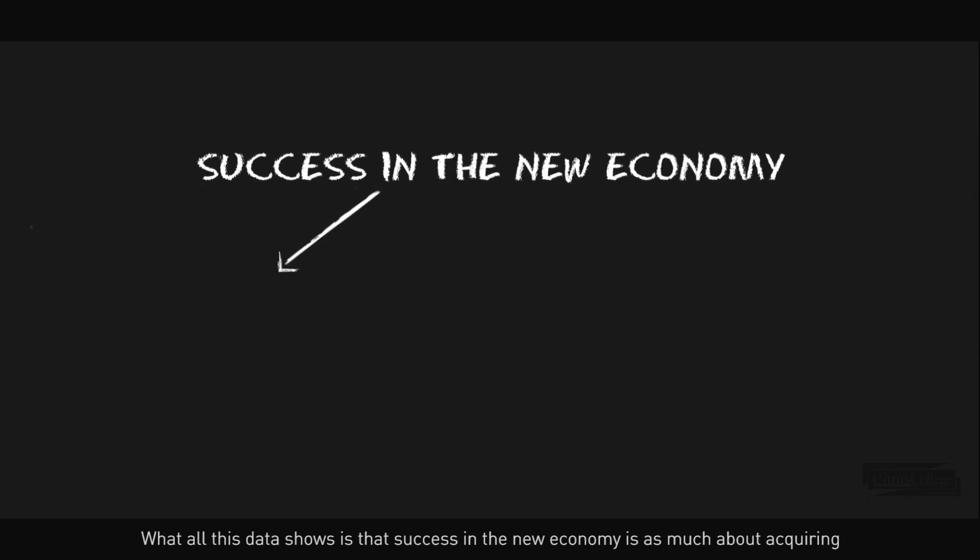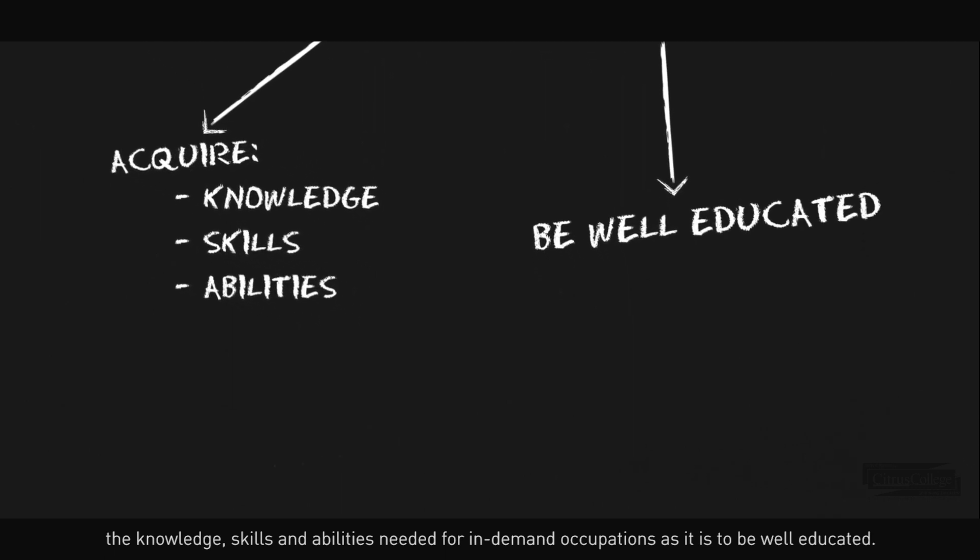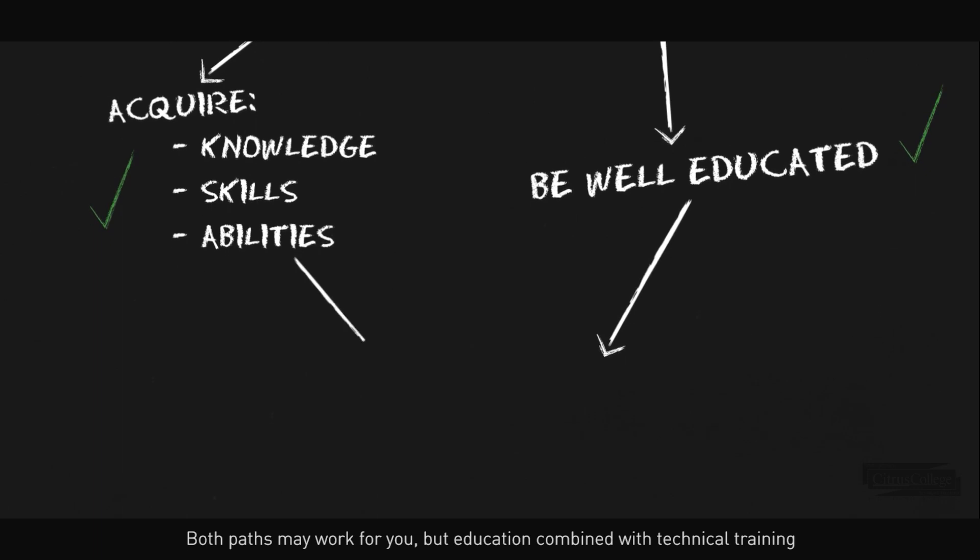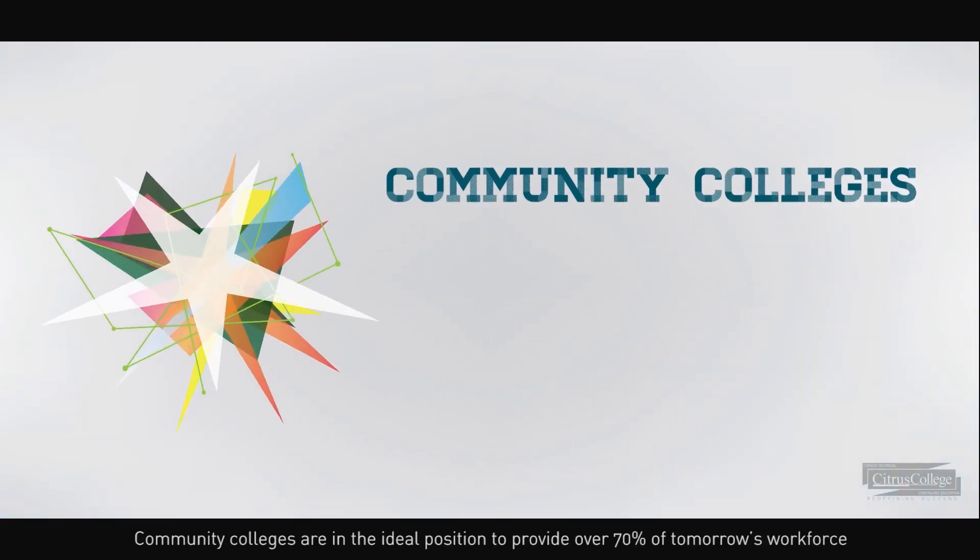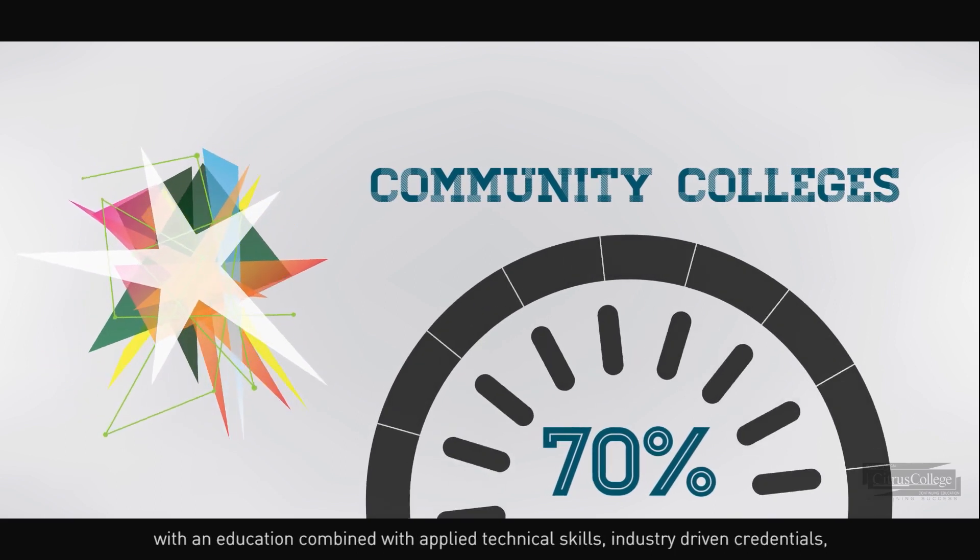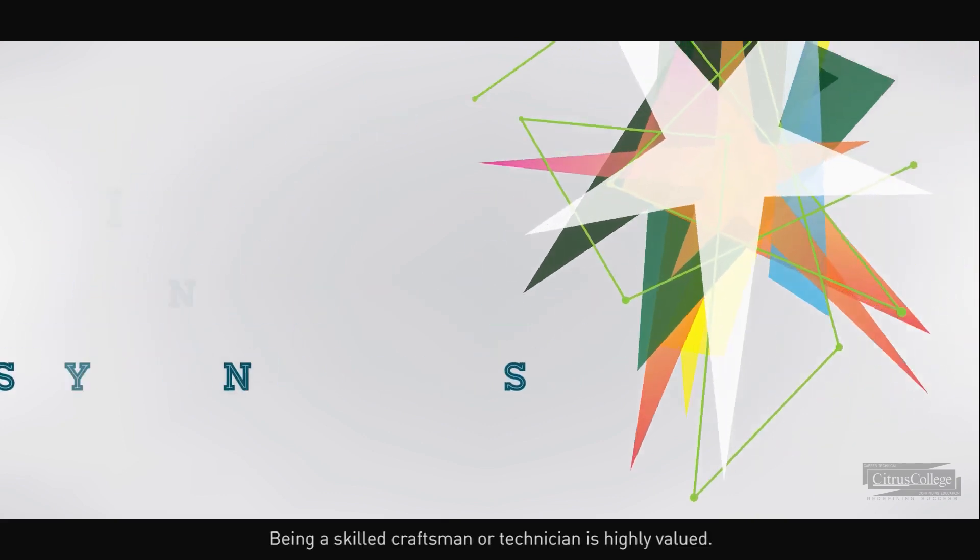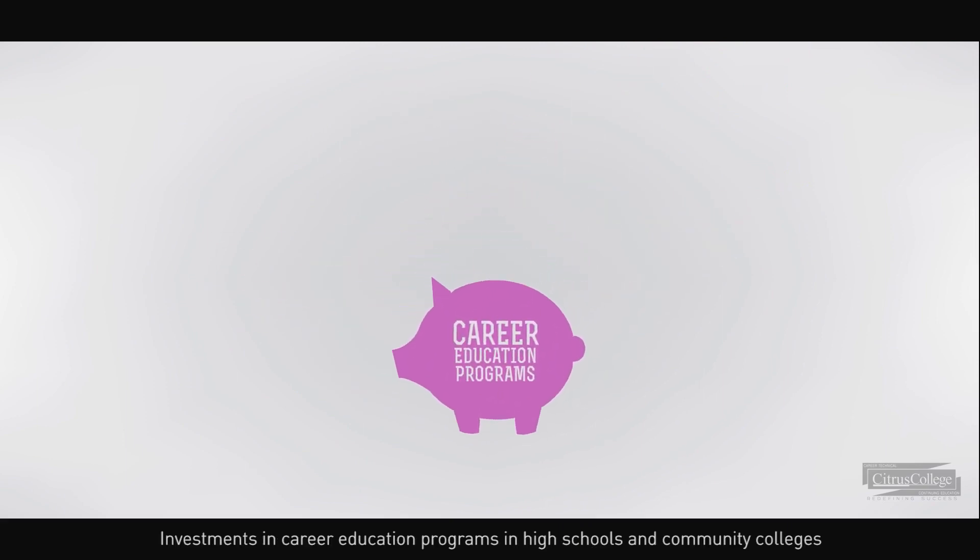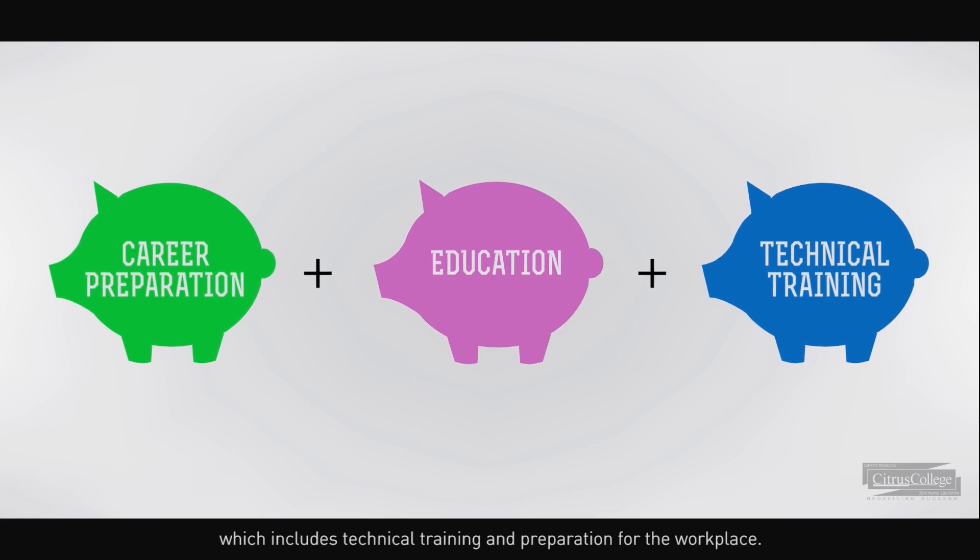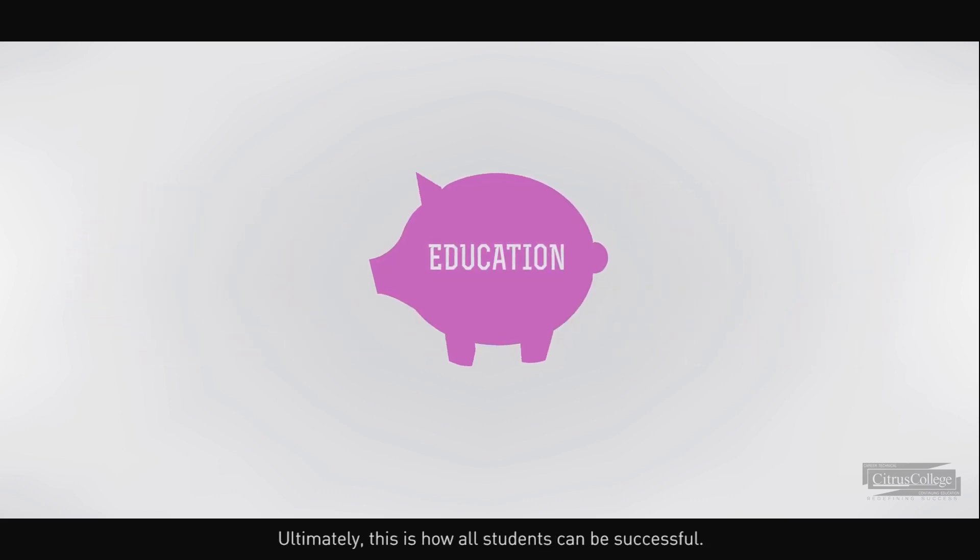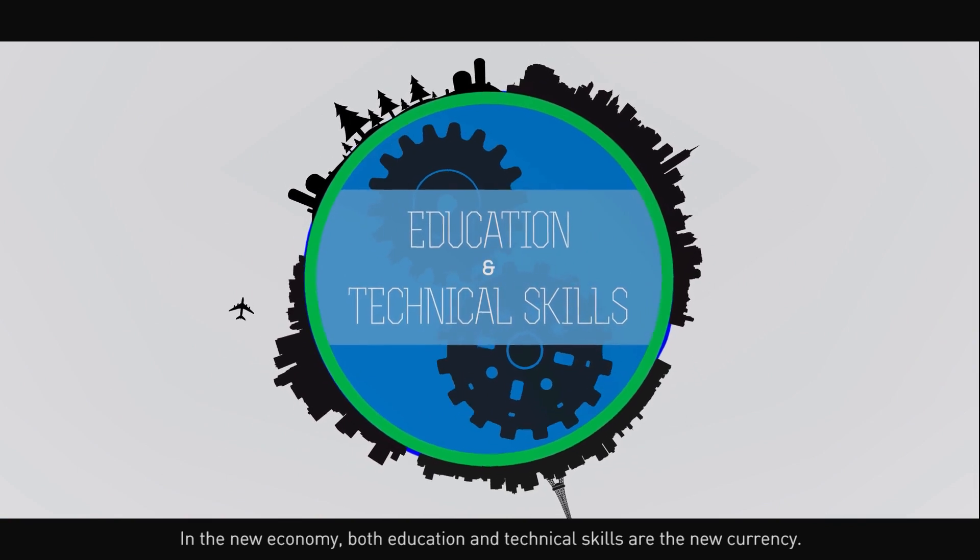What all this data shows is that success in the new economy is as much about acquiring the knowledge, skills, and abilities needed for in-demand occupations as it is to be well-educated. Both paths may work for you, but education combined with technical training is how you ultimately secure a competitive advantage in the new economy. Community colleges are in the ideal position to provide over 70% of tomorrow's workforce with an education combined with applied technical skills, industry-driven credentials, and specific preparation for employment. Being a skilled craftsman or technician is highly valued. Investments in career education programs in high schools and community colleges will help all students obtain an education which includes technical training and preparation for the workplace. Ultimately this is how all students can be successful. In the new economy both education and technical skills are the new currency. Will you be ready?